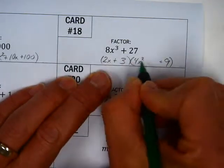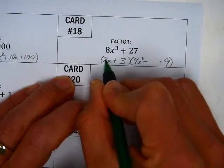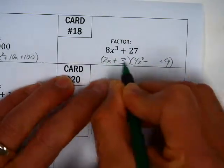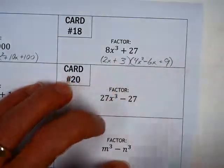That's a plus. This is a plus, that's a minus. This times this is the middle. 2x times 3, 6x.